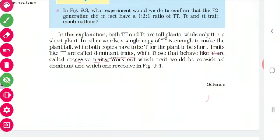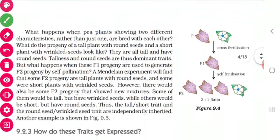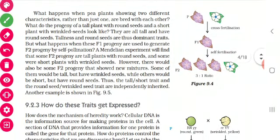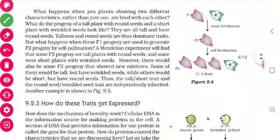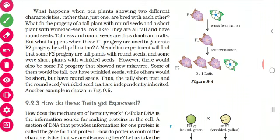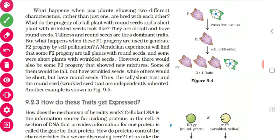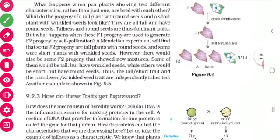Go through that and you can get some information. Then again, he took some plants and obtained progeny. He took a tall plant with round seeds and a short plant with wrinkled seeds, obtained the progeny, and in the F2 progeny he obtained tall plants with round seeds, and a very few with short and wrinkled seeds. The tall/short trait and the round/wrinkled trait are independently inherited.